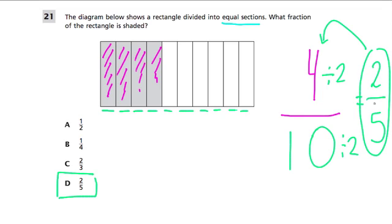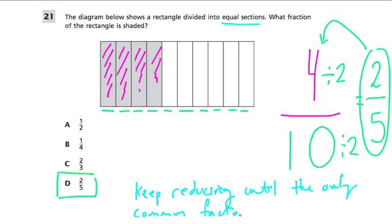the only common factor between two and five is one. So you should always keep reducing your numerator and denominator until the only common factor is one.